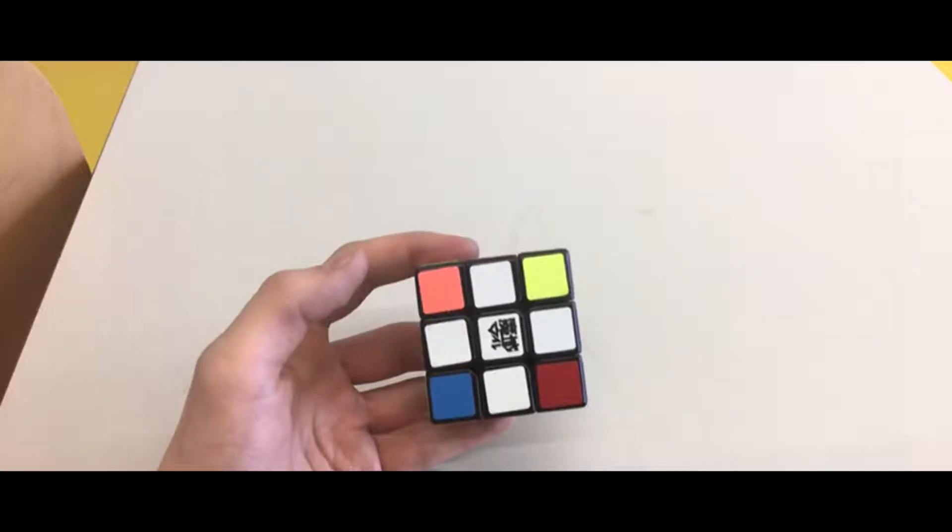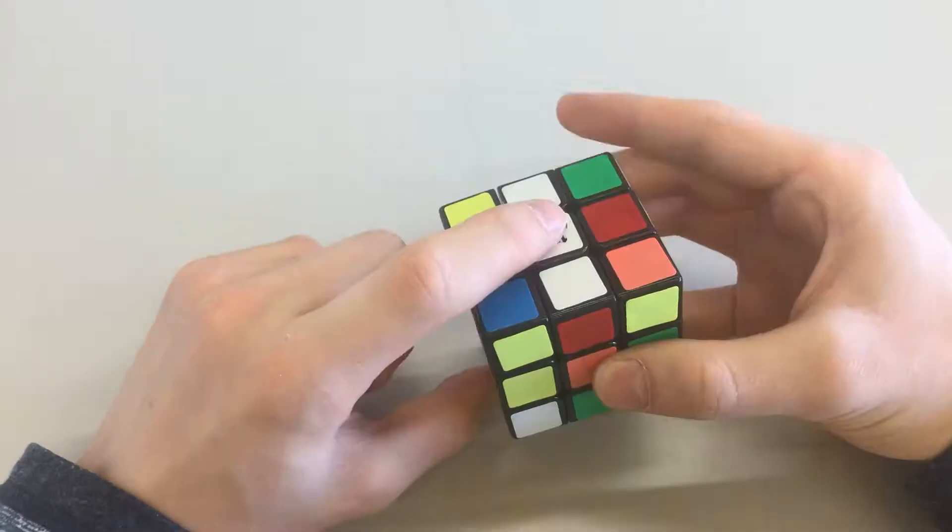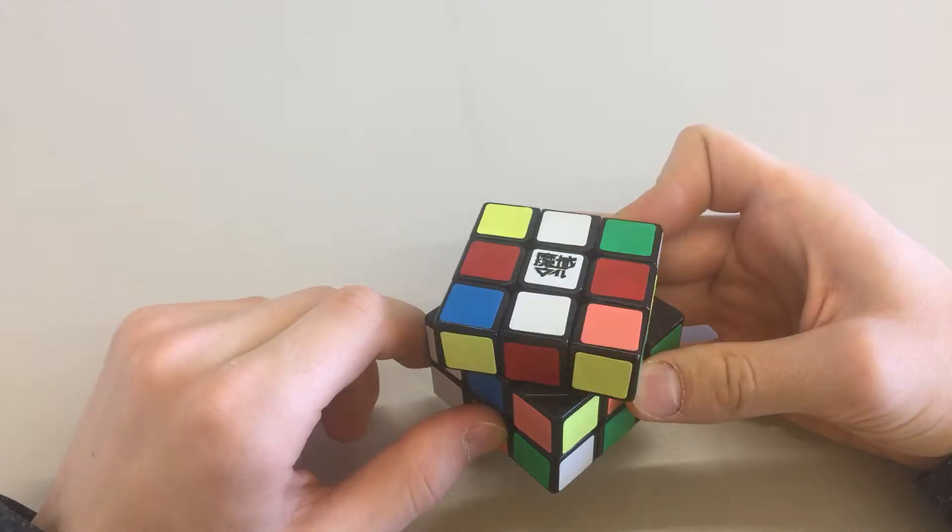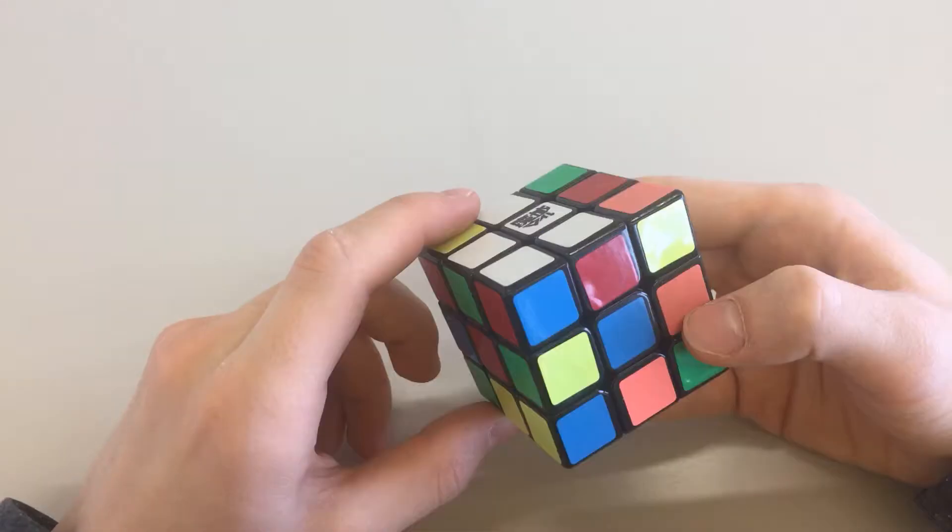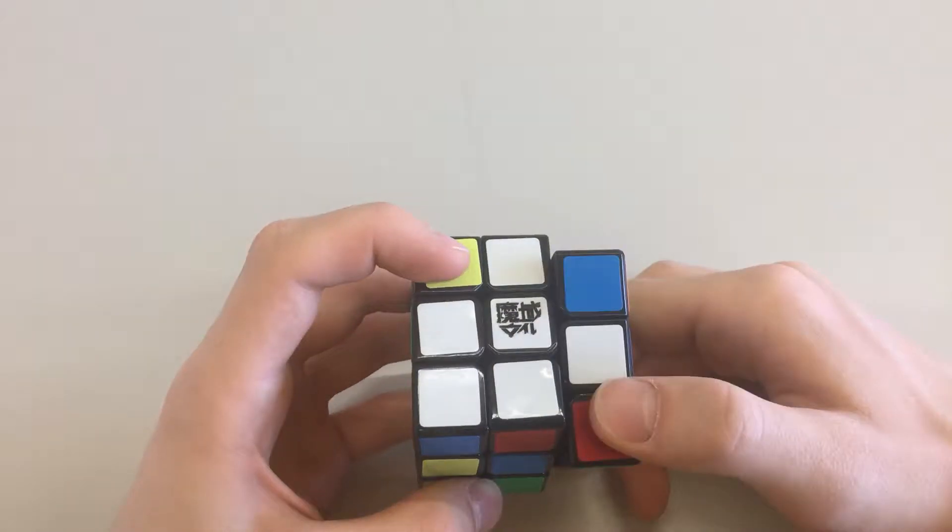First of all, we need a cross. For that, there aren't any tips or tricks. All you need is logic, time and practice. Basically, what you have to do is just put those 4 sided pieces up to the white center, and that's the cross.